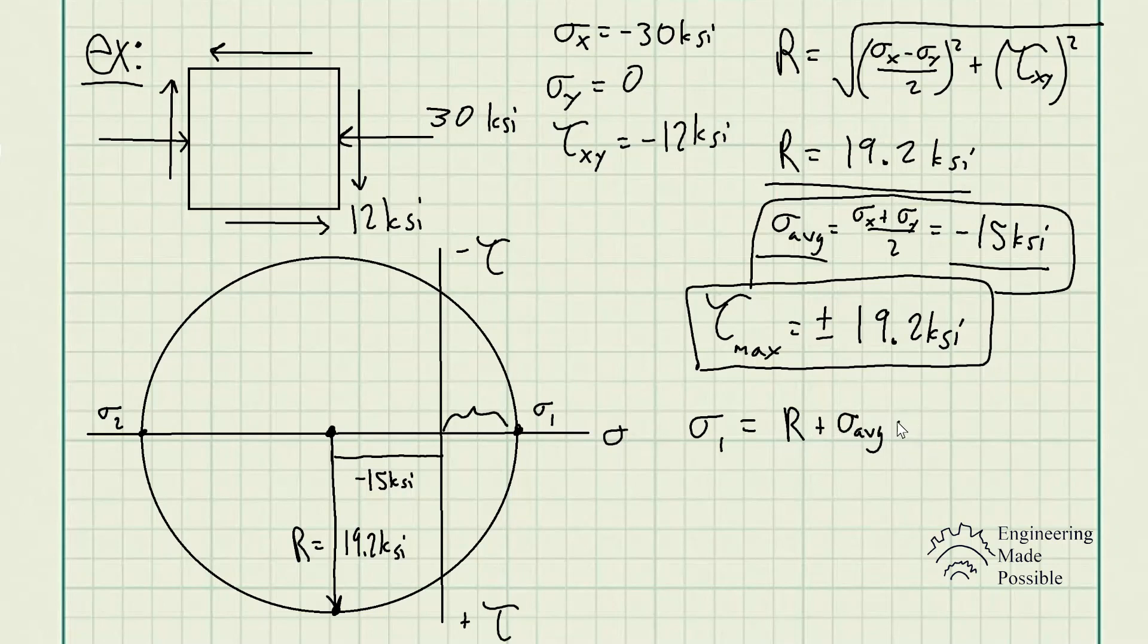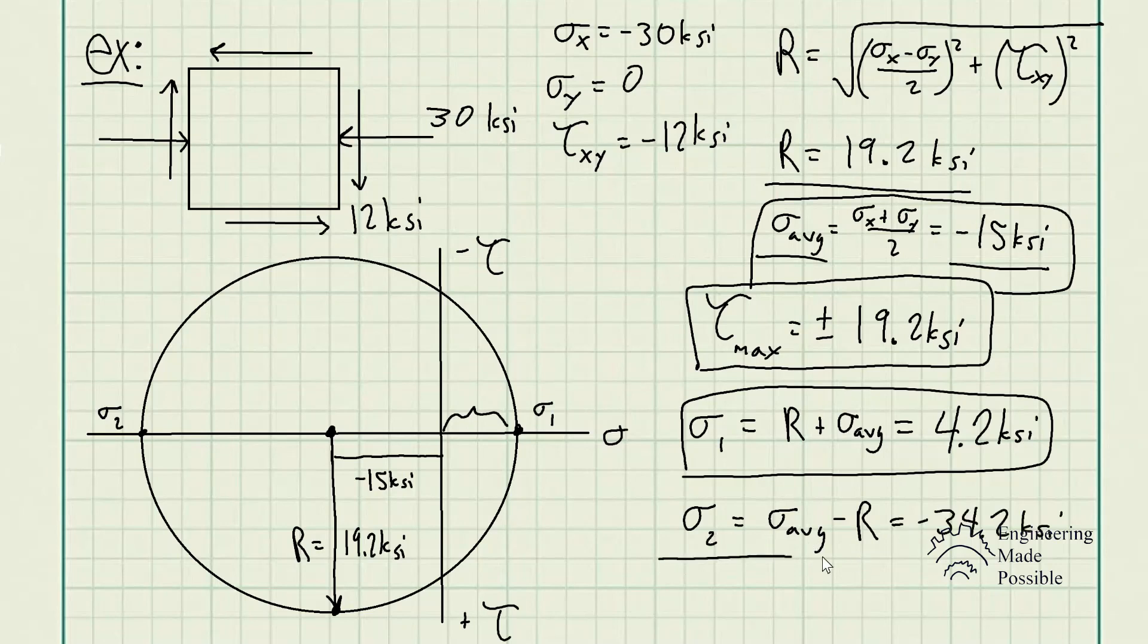Which gives us 4.2 KSI. And the second principal stress is equal to the average normal stress, take away the radius. Because in this case, we're going negative 15, then another minus R over here. So it's the average minus the radius, which gives us negative 34.2 KSI.